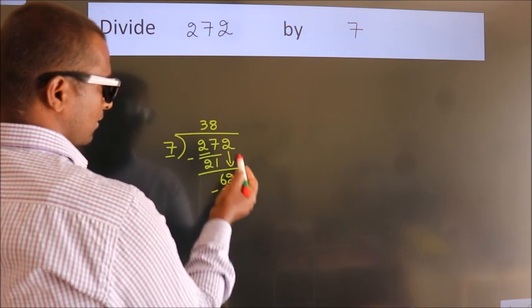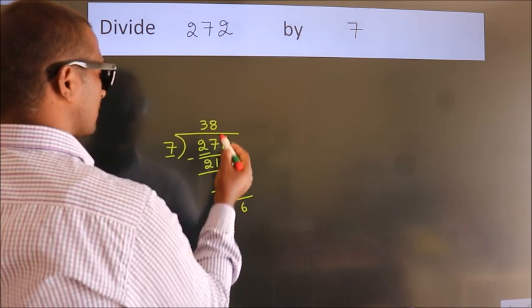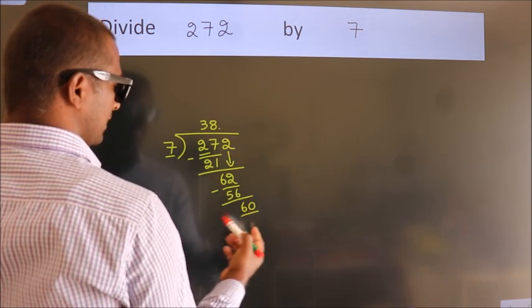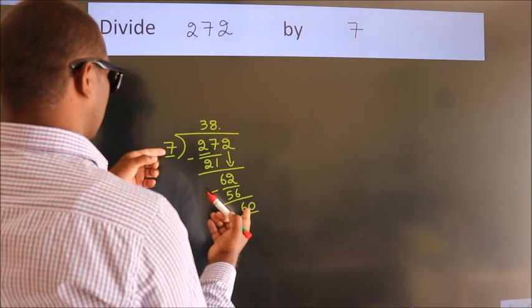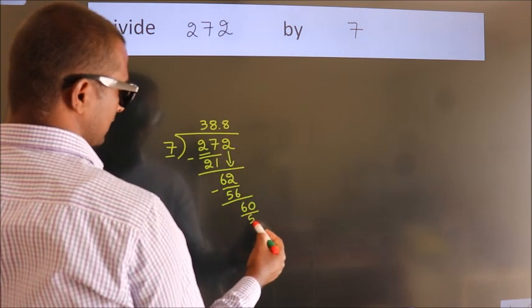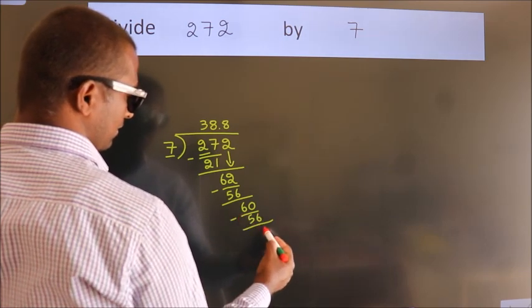After this, no more numbers to bring it down. So what we do is, we put dot take 0. So 60. A number close to 60 in 7 table is 7 eighths, 56. Now we subtract. We get 4.